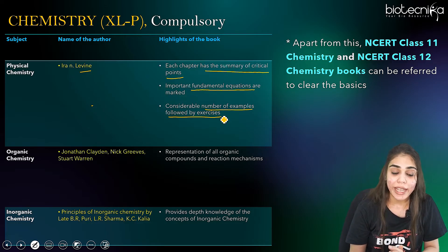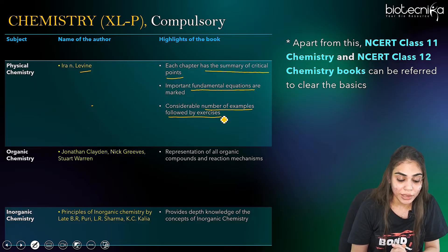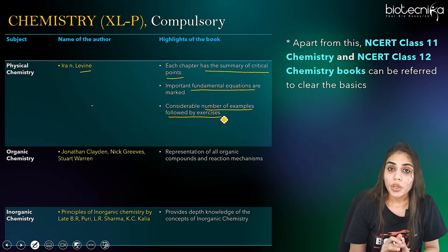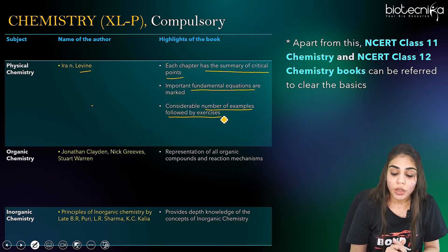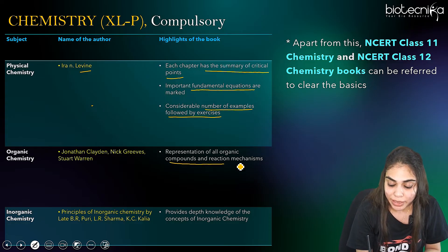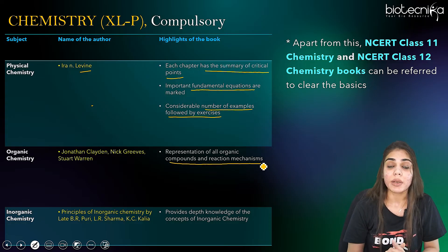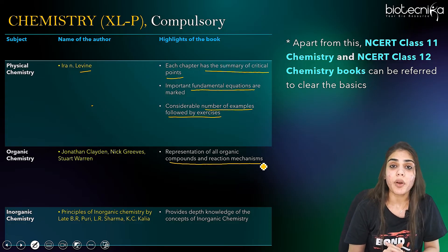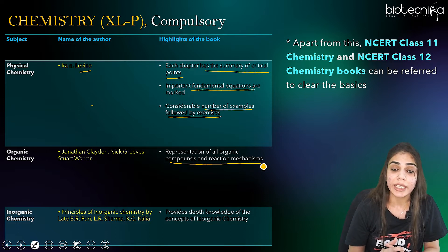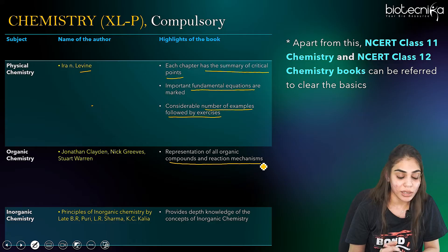For organic chemistry, you can go for Jonathan Clayden et al. Here you will get all the representation of organic compounds and reaction mechanisms, which will be very important and easy for you to prepare the general organic chemistry part in the GATE Life Sciences syllabus.